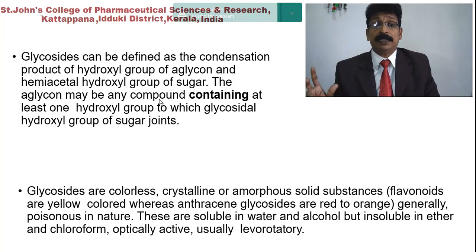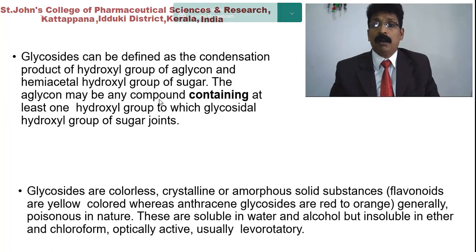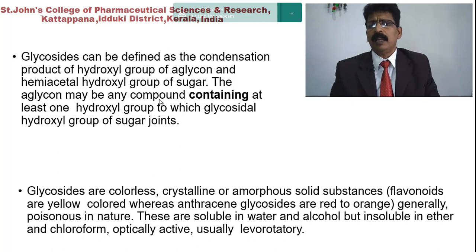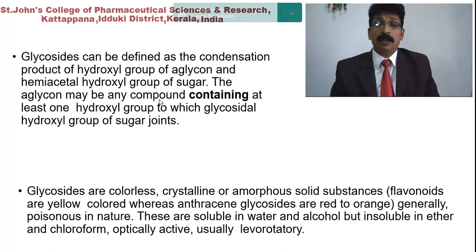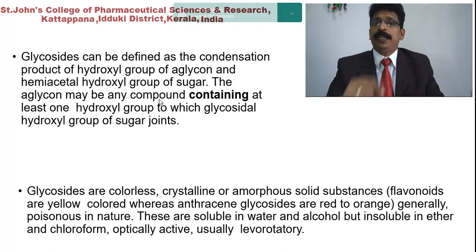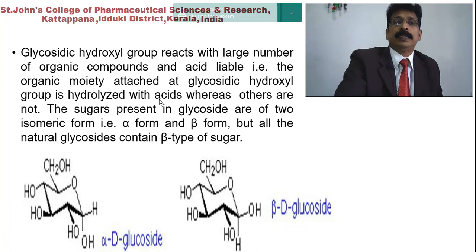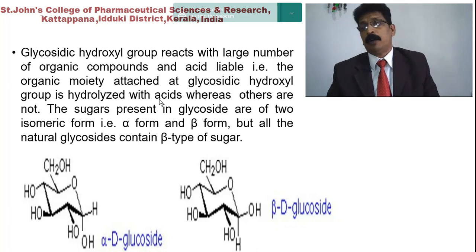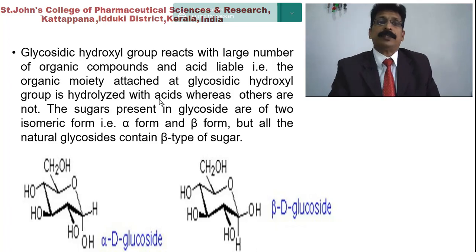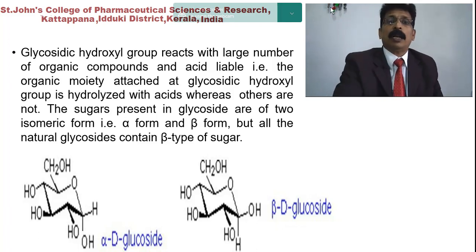Some glycosides are exceptions in color — flavonoids are yellow, while anthraquinone glycosides are red to orange. Some are generally poisonous in nature. Glycosides are soluble in water and alcohol but insoluble in low polarity solvents like ether and chloroform. They are optically active and usually levorotatory in their optical rotation.